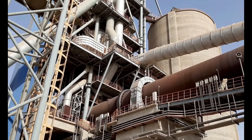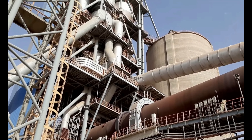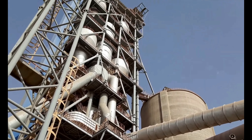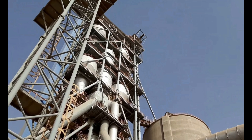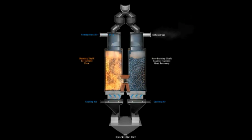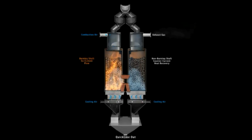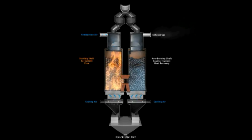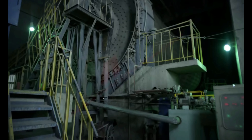The powdered raw meal is then heated in a preheater tower, where hot gases from the kiln are used to raise the temperature. As the raw meal moves through the preheater, it undergoes partial calcination, which means that some of the carbonates in the limestone decompose to form calcium oxide — which is lime.